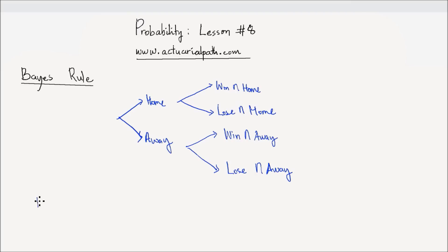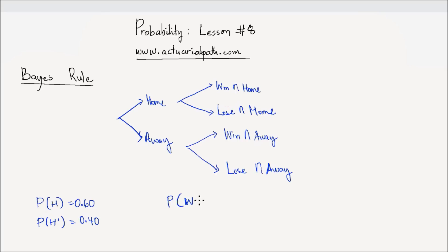Let's say on average, 60% of the games are played at home. So H is the event that a game is played at home, and the probability of H complement would be 40%. Also, let's say the probability of winning — event W — given the game is played at home is 75%, or 0.75. And the probability of winning given the game is played away, H complement, is 45%.